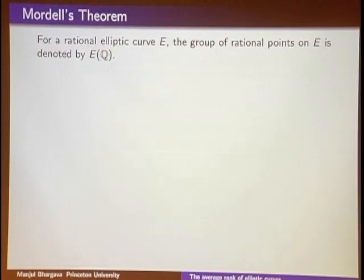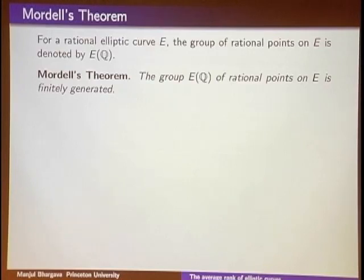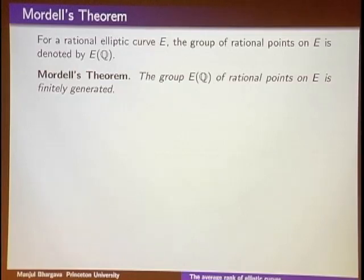To understand the structure of this abelian group E(Q) — the group of rational points under the addition law — there's the celebrated Mordell's theorem, which says E(Q) is finitely generated. This means you can always start with some finite set of points, play this connect-the-dots game using the addition law, and eventually produce all rational points just from that finite starting set.